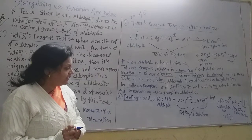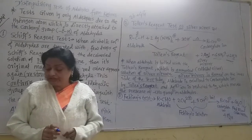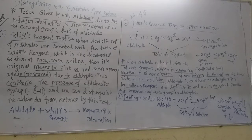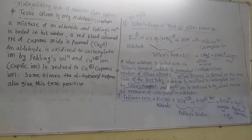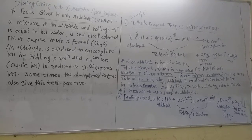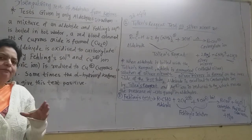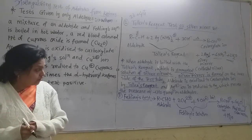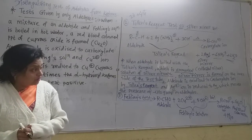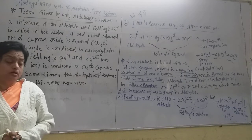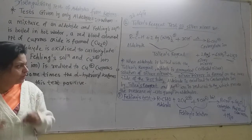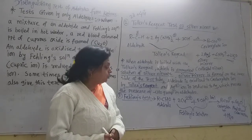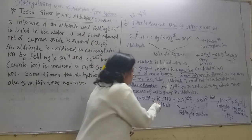Fehling's solution is the mixture of equal amounts — 50-50 percent — of Fehling's A and Fehling's B mixed together to form Fehling's solution. Cupric nitrate and sodium hydroxide are mixed together, and tartaric acid is also used in this Fehling's solution.